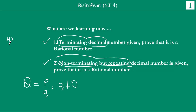For example, maan leji agar haam 10 divided by 2 karte hain, so we will get 5 — or we write 5.0. So this is what we call a terminating decimal expansion. But on the other hand, maan leji agar haap 1 by 3 karte ho, then you get basically the 3 repeating.